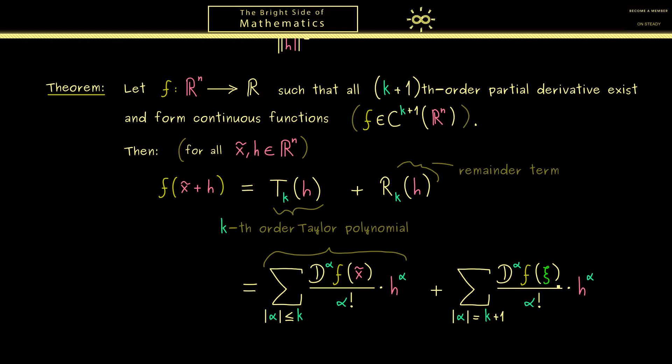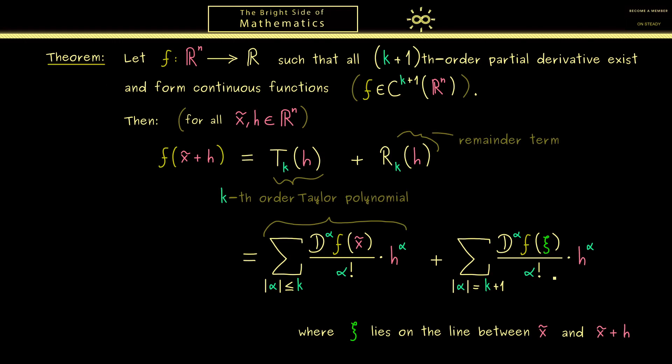Now, I said it is an intermediate point, which means it should lie between x tilde and x tilde plus h. And now in this higher dimensional case, it simply means that ξ lies on the line between x tilde and x tilde plus h. This is not hard to visualize, because both things are just points in Rⁿ and of course we can connect them with a line. Indeed, this line should be given by the vector h. And now we can conclude here that ξ is just one vector on this line.